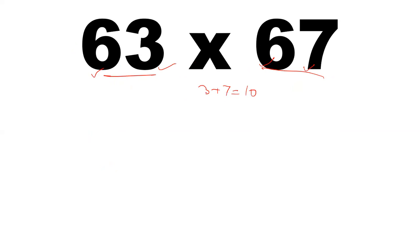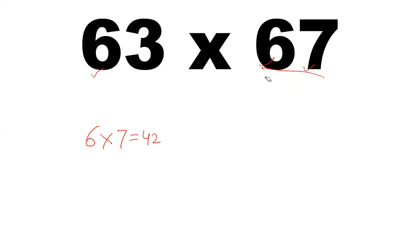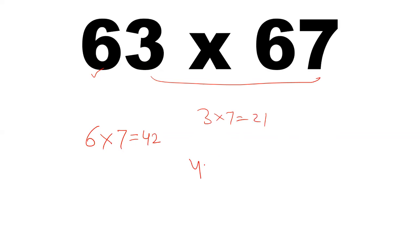In such a case, take 6 and the next counting number, which is 7. 6 into 7 is 42. Now multiply the unit digits 3 and 7: 3 into 7 is 21.